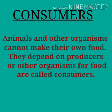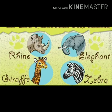Consumers. Animals and other organisms cannot make their own food. They depend on producers or other organisms for food, so they are called consumers. The examples of consumers are rhino, elephant, giraffe, and zebra.